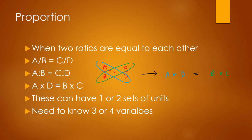What is a proportion? So a proportion is when two ratios are equal to each other. So this can be shown as A divided by B equals C divided by D, A colon B equals C colon D, or A multiplied by D equals B multiplied by C.